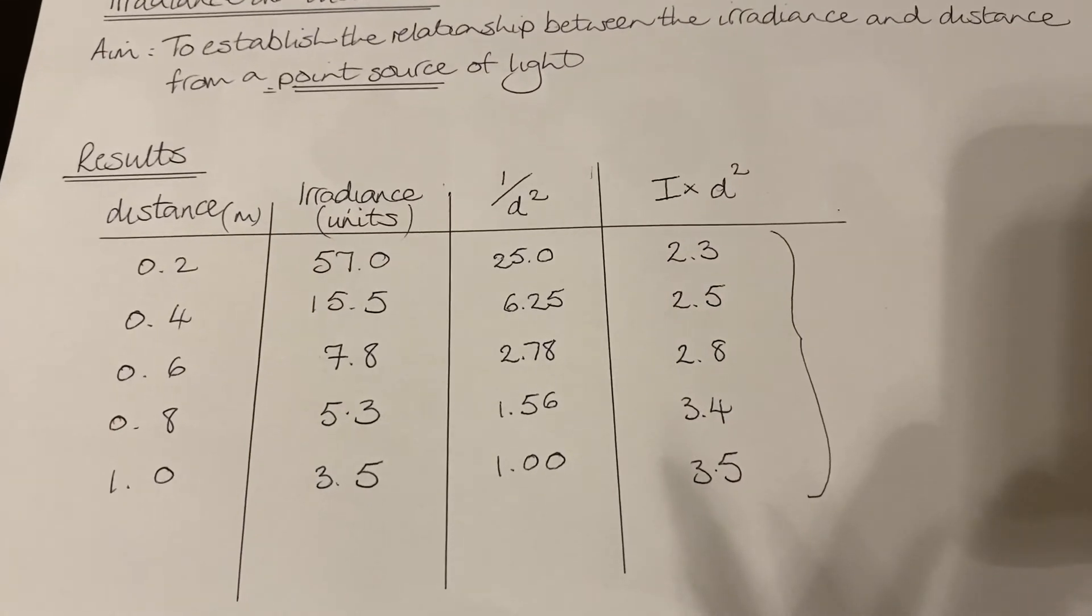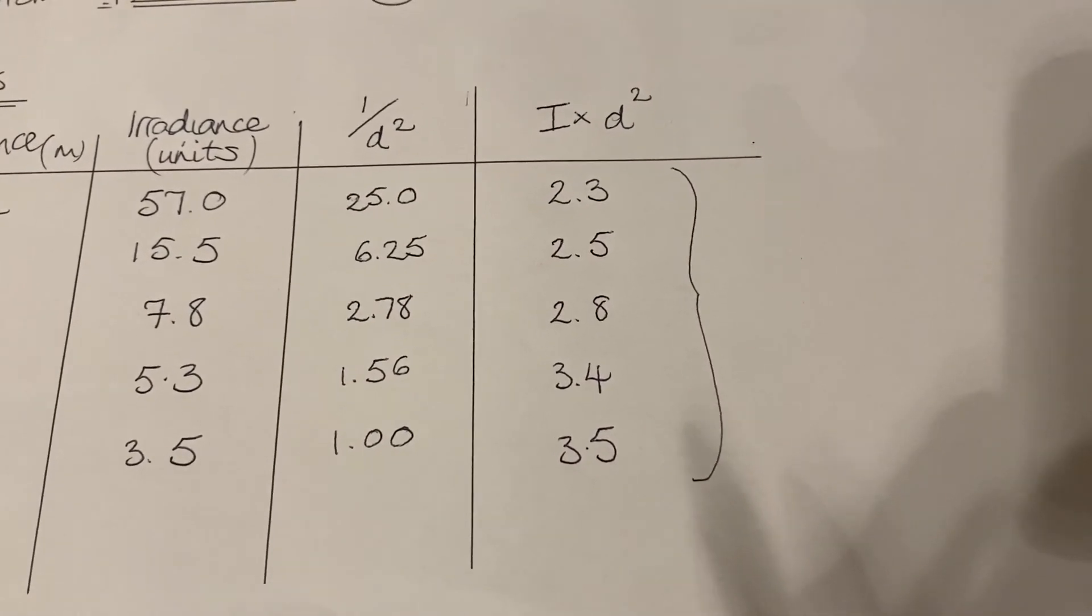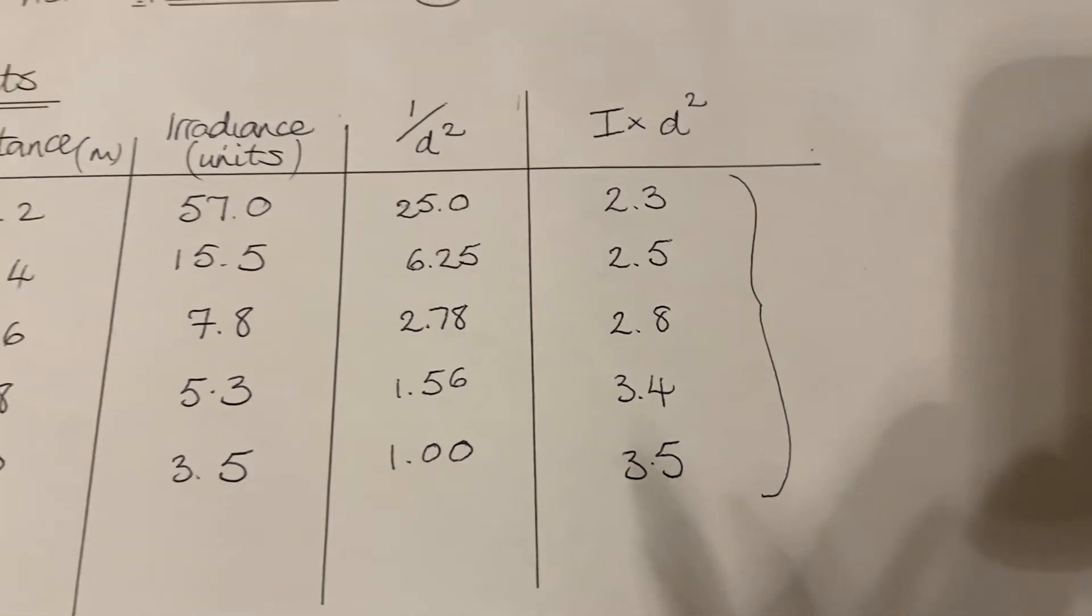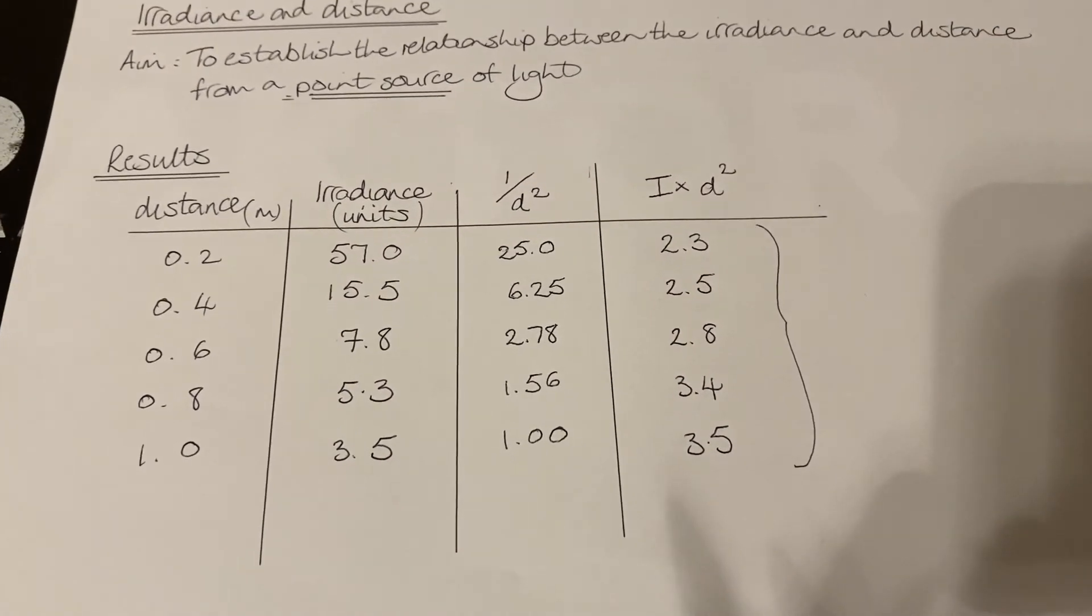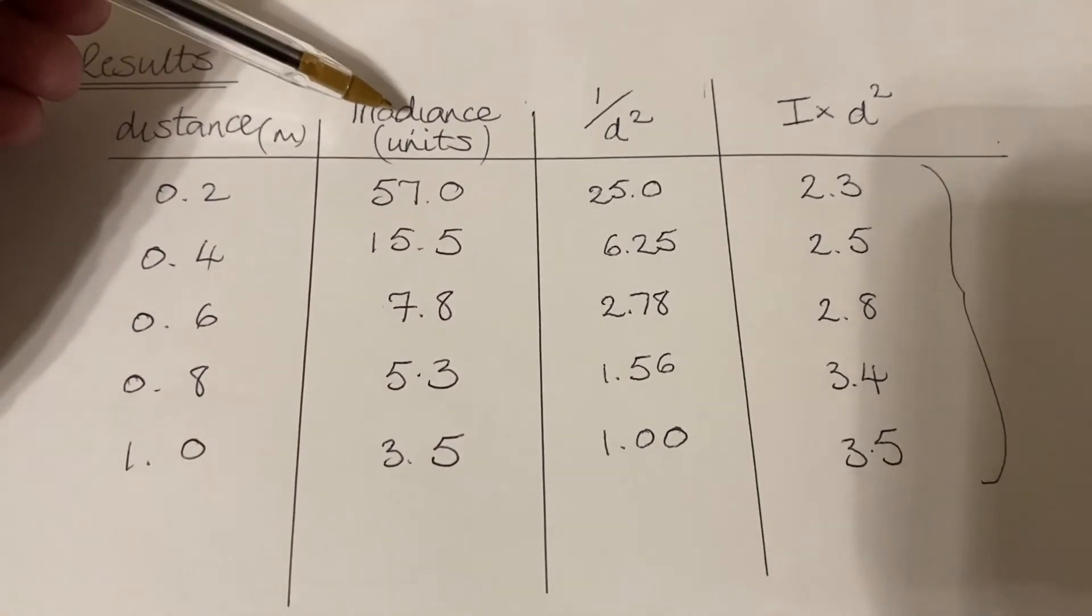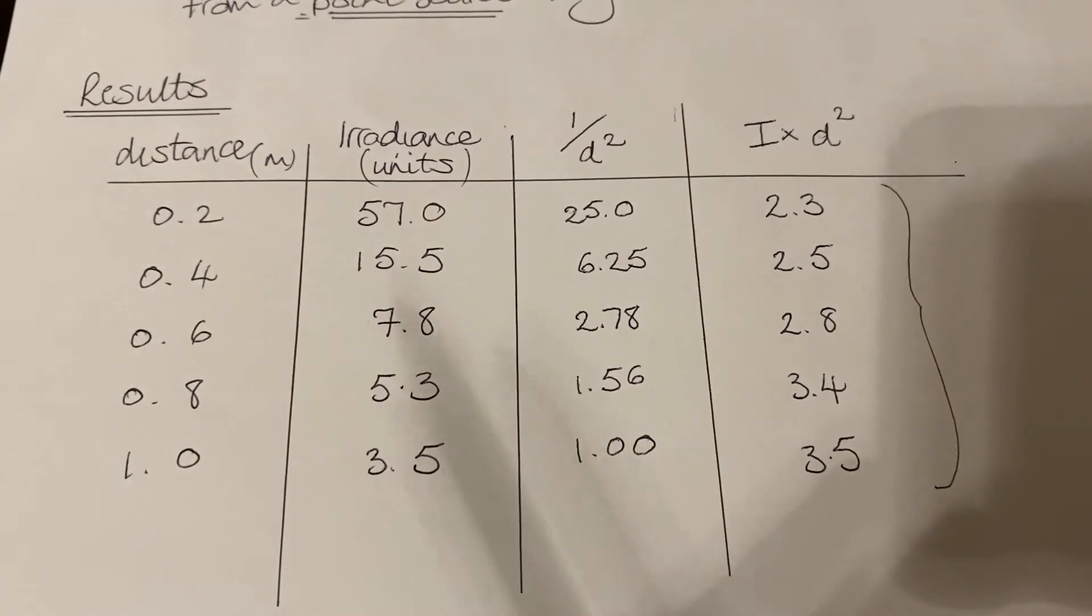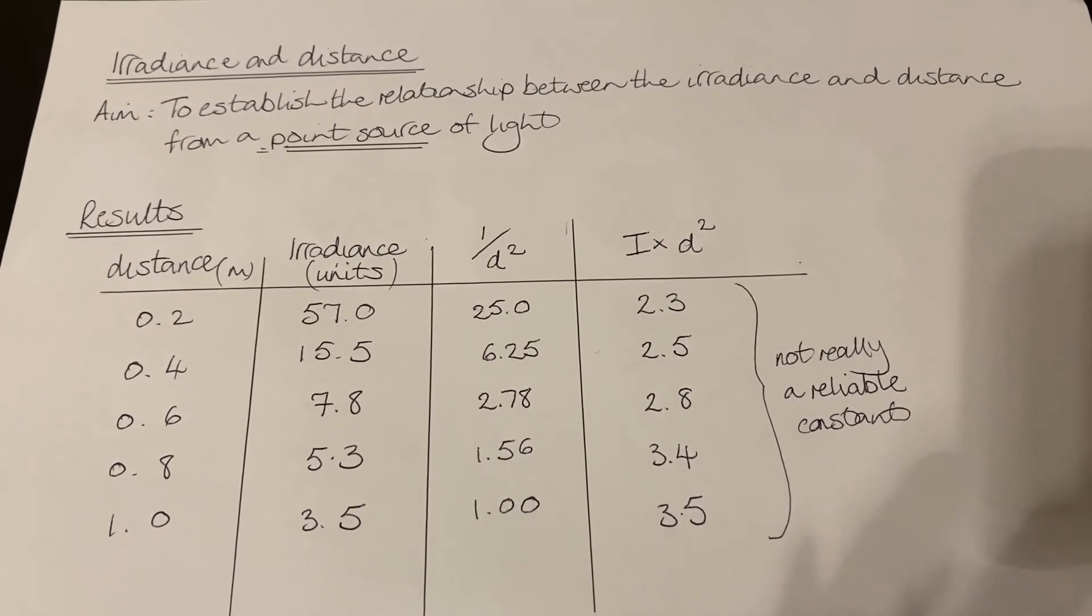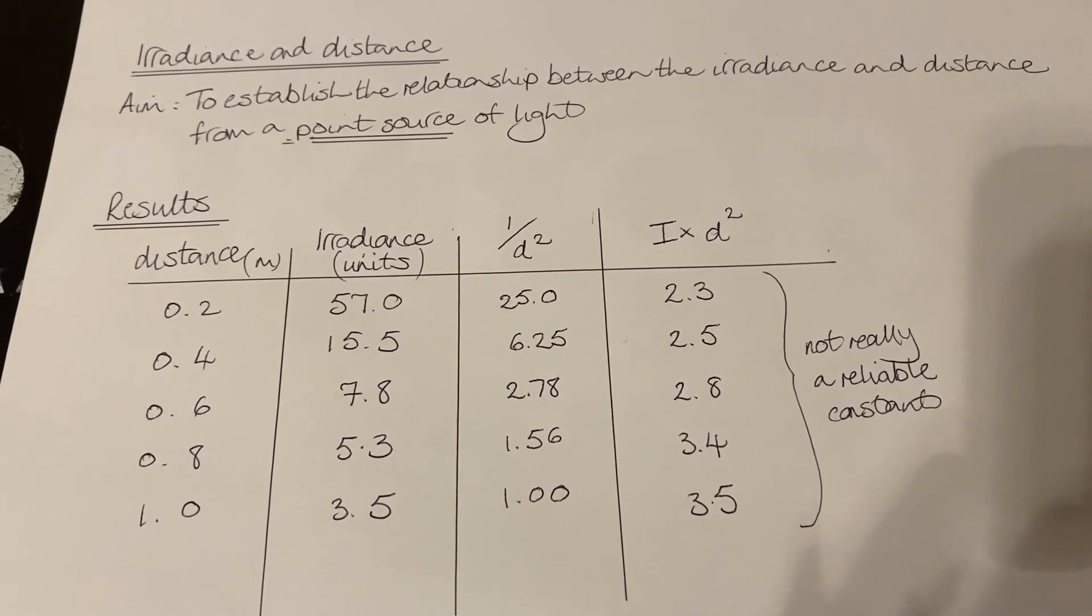So I've calculated I times d squared, and I'm expecting a constant. Doesn't look really like a constant—there may well be some systematic uncertainty in this. So what we should really do is plot a graph. I'm going to plot a graph of irradiance on my y-axis, 1 over d squared on my x-axis. We'll see how that looks. That constant isn't really reliable enough for us to see that I times d squared is a constant, so we'll see how we go on with the graph.